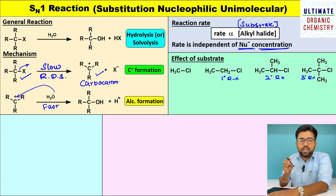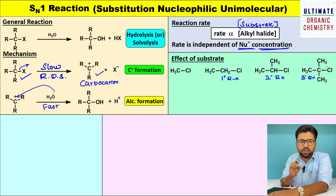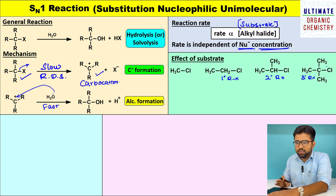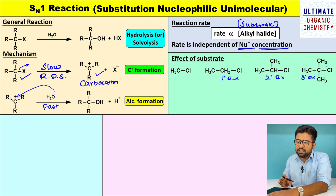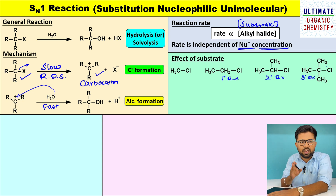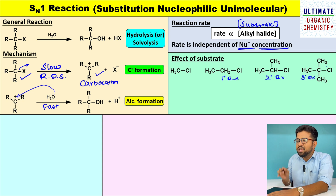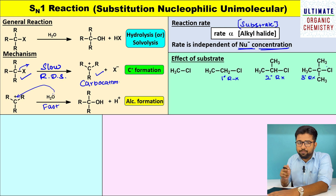We need to know which is more reactive and which is less reactive in SN1 reaction. For that purpose, you need to look at the rate determining step. The rate determining step in SN1 reaction is the formation of carbocation. So you need to draw the carbocation intermediate of all four species.